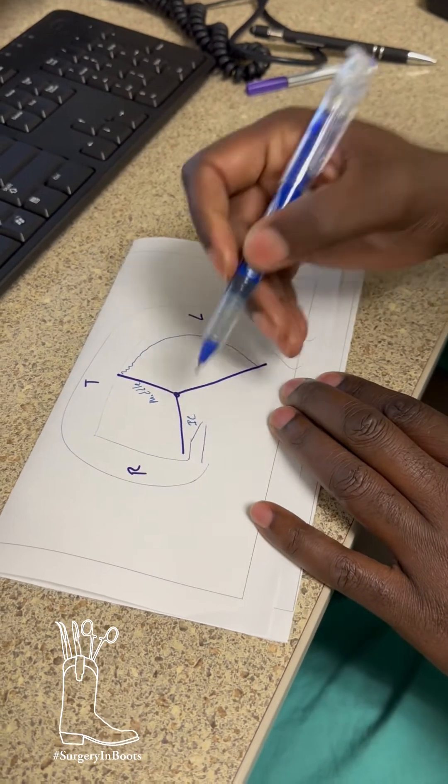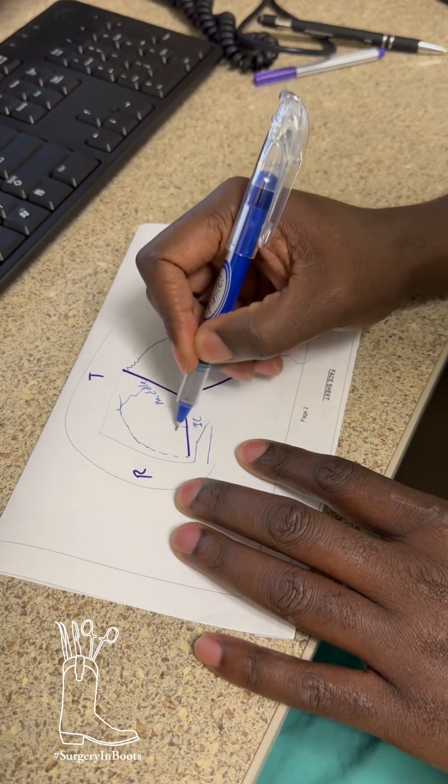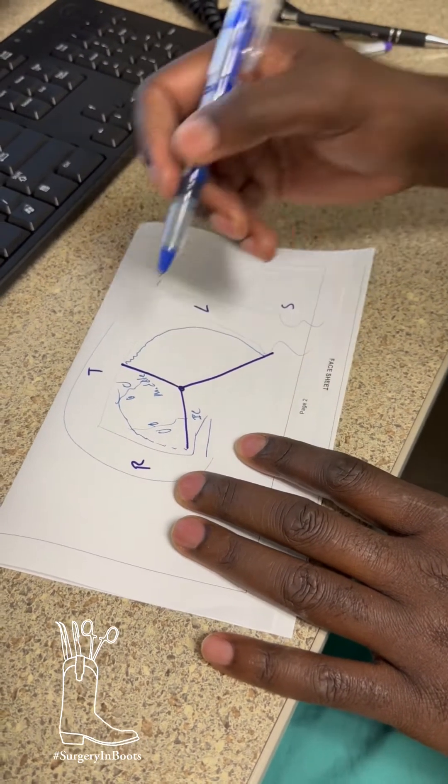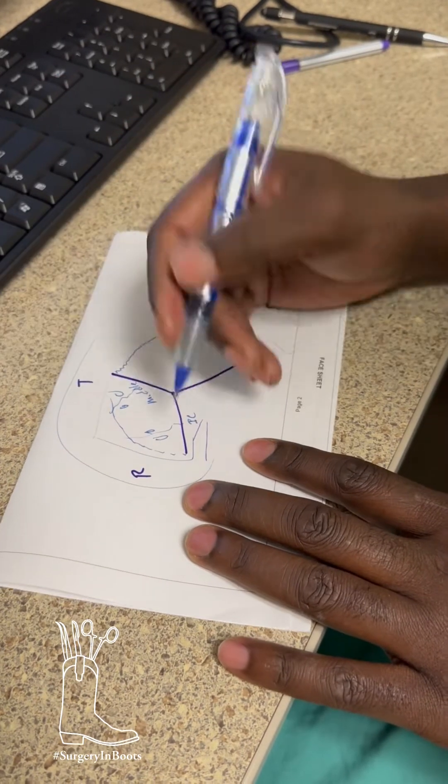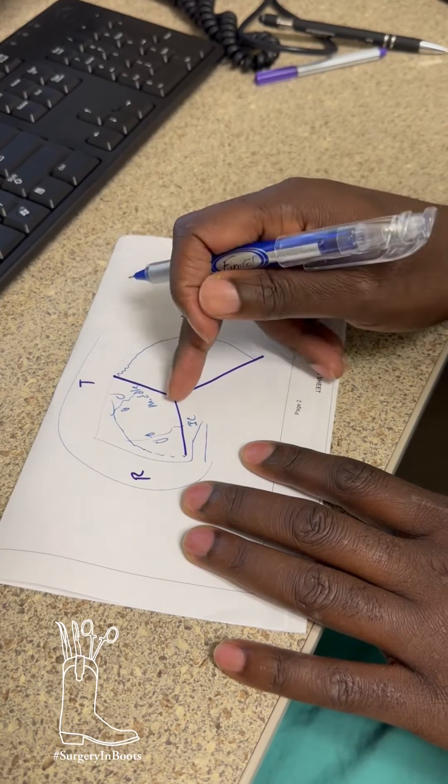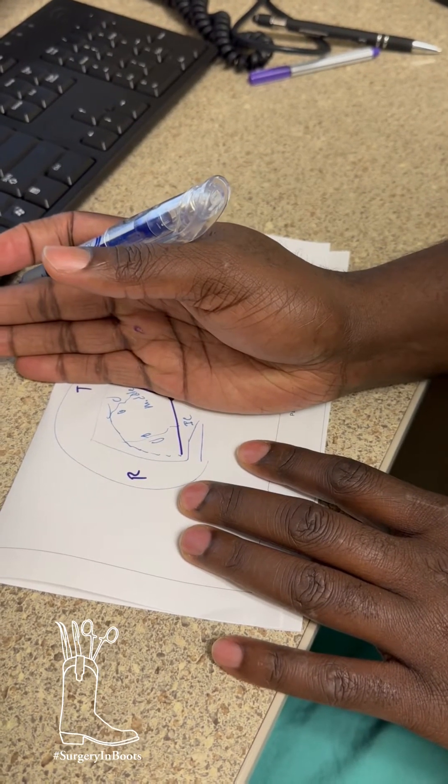So when you do a right colectomy, you have these little cascades that kind of come here, little cascades that come here, little stuff come here, lymph nodes here, lymph nodes here. So we can do a right colectomy. You want to take the iliocolic artery, come to the right of the middle colic artery, and that's called an anatomic resection.